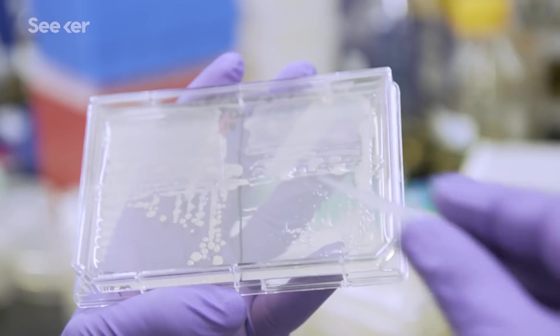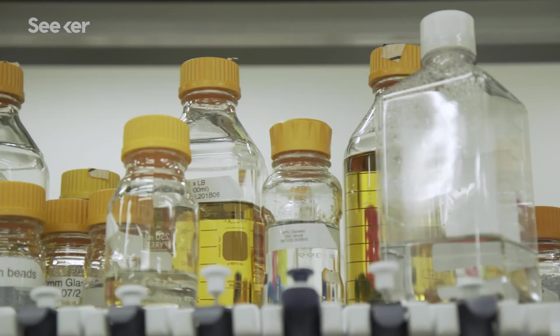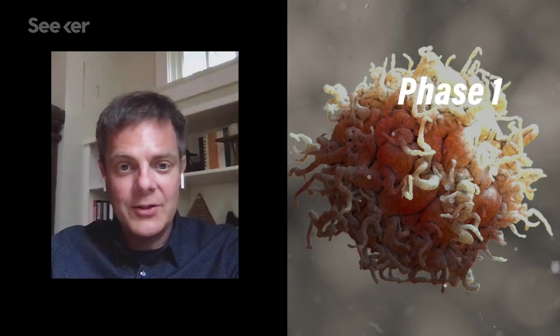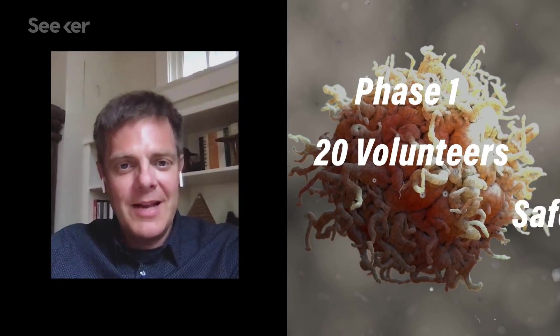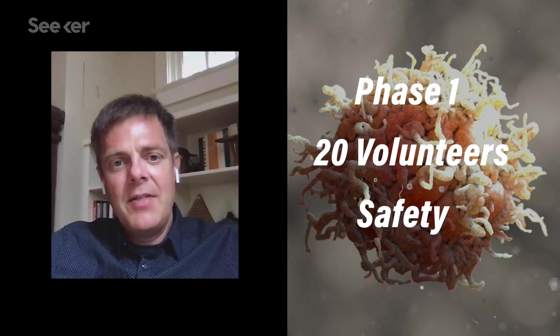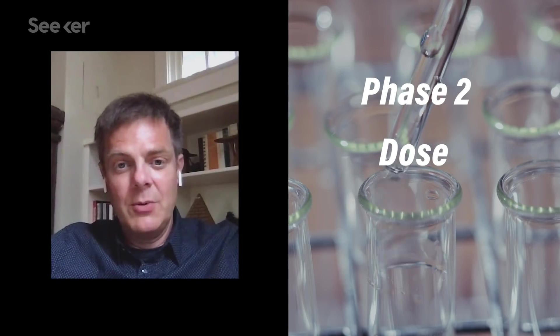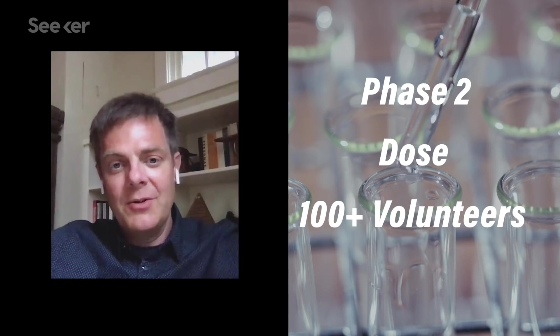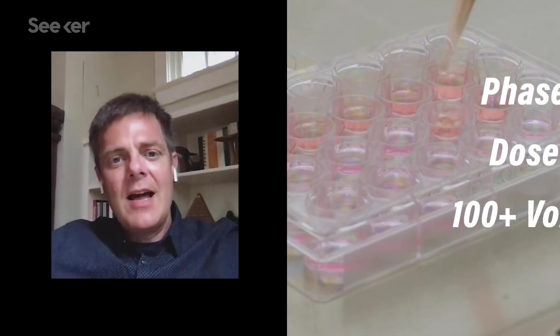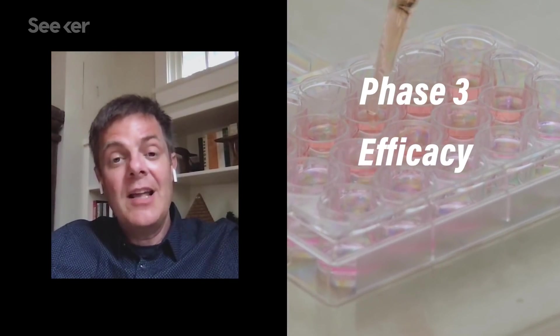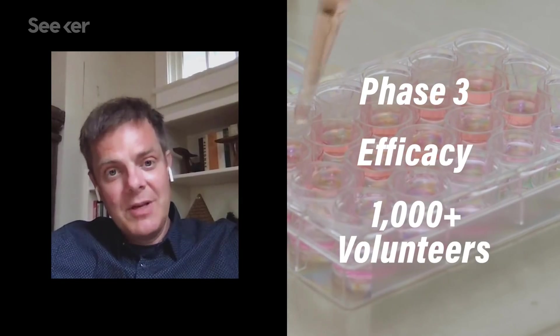The first human trials of any antibody are likely to be in the June to August window. That's when we just put antibody into 20 people and make sure nothing bad happens. Then there's a next step where we need to figure out what's the dose. Usually we give a hundred people a dose, another hundred people a lower dose. Then finally you do what's called a phase three trial and you figure out if it works. That's thousands of people.